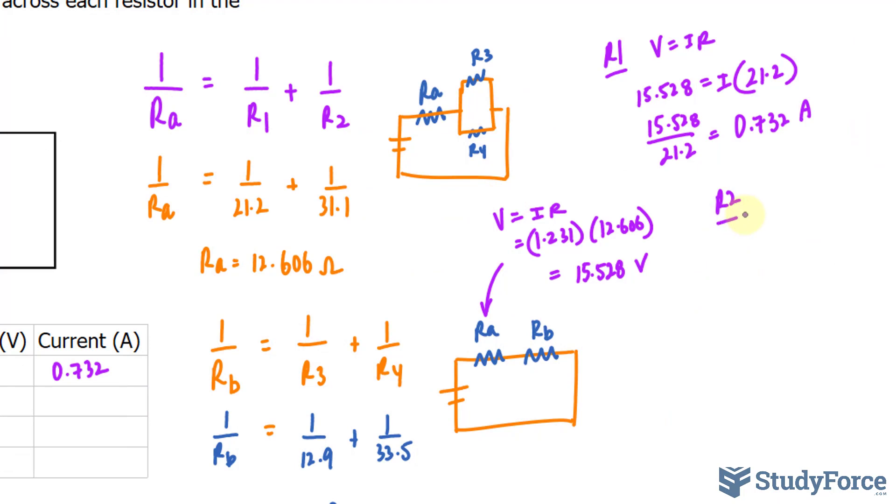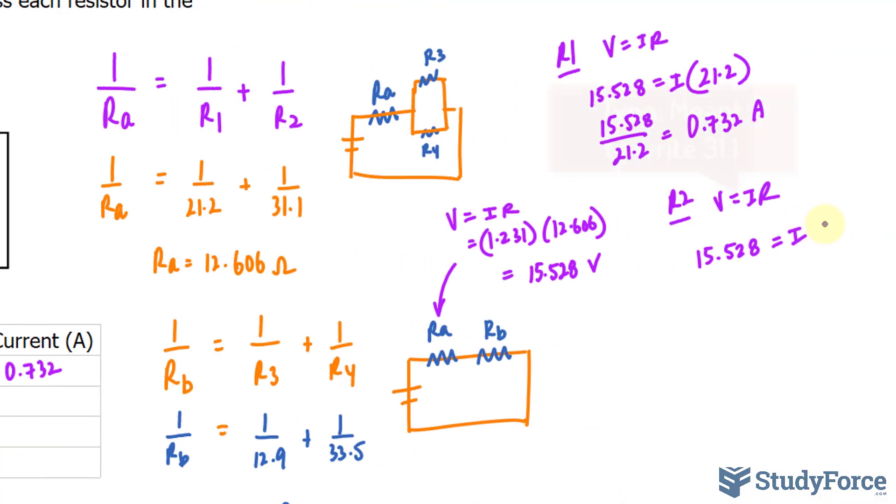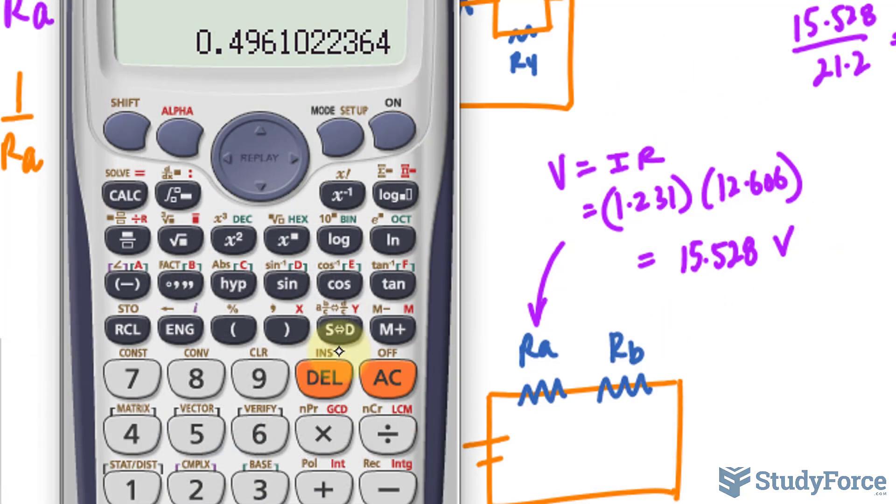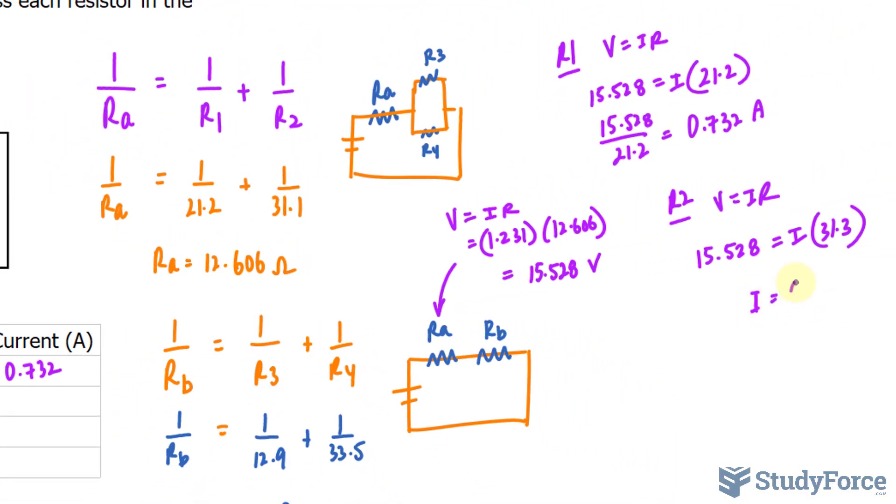At R2, using the same approach, V is equal to IR. I know that its voltage will be 15.528. The current is what we're looking for and the resistance was given in the question as 31.1. Now, dividing these two numbers out, we get a current of 0.496. I is equal to 0.496 amperes.